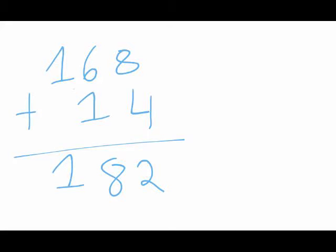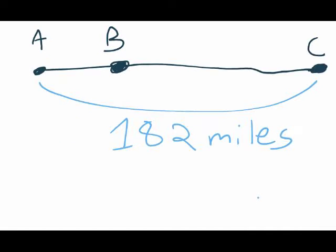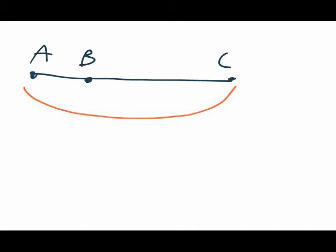168 plus 14 is 182. So the whole distance would be 182 miles. But that's not the answer yet. We want to know what the distance between A and B is.